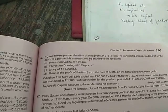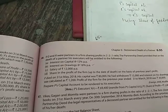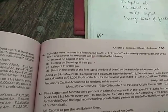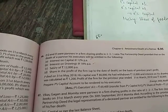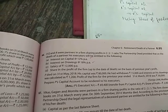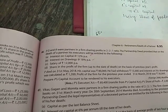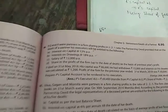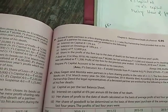The partnership deed provides that in the case of death of a partner, the executors will be entitled to the following: Number A, interest in capital at the rate of 12% per annum. Number B, interest in drawings at the rate of 18% per annum. Number C, salary at the rate of 12,000 per annum. Number D, sharing profit of the firm up to the date of death on the basis of previous year's profit.